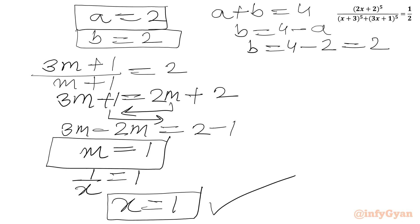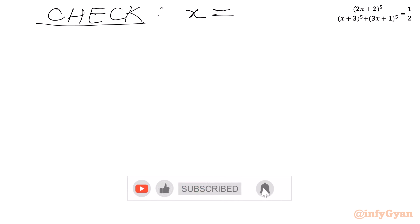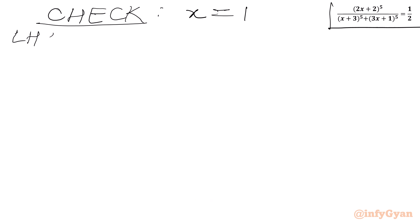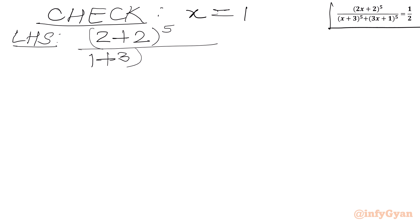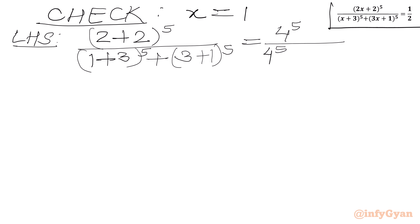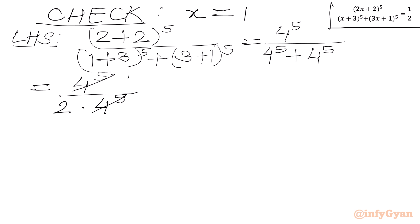Let us cross-verify with x = 1. The LHS becomes (2×1+2)^5 over (1+3)^5 + (3×1+1)^5 = 4^5 over 4^5 + 4^5 = 4^5 over 2×4^5 = 1/2. And 1/2 is our RHS. Hence our solution is true and verified.